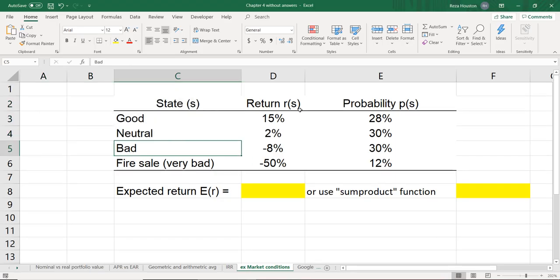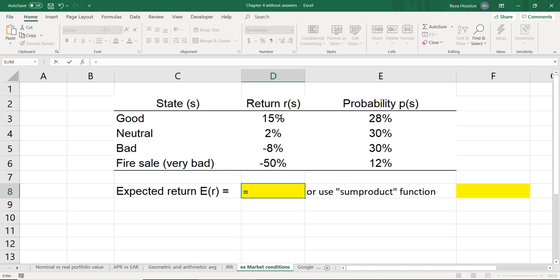Here we go, same data here. Now what we want to do is calculate our expected return. Remember that's just the sum of each of these products of probabilities times the return. So to get that, I'm going to take the probability of the good state occurring, multiply it by the return in that state,